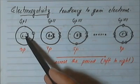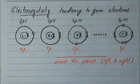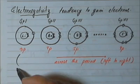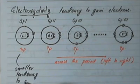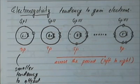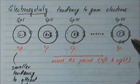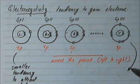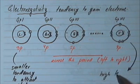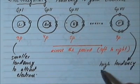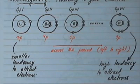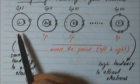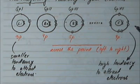Three protons in the nucleus will not exert enough positive charge to attract electrons, so lithium will have a smaller tendency to attract electrons. Fluorine, on the other hand, has nine protons, so its nucleus is very positively charged and is going to attract electrons very strongly. So fluorine is going to have a very high tendency to attract electrons. You have this trend across the period — as you move from the left-hand side to the right-hand side of the periodic table, the tendency for atoms to attract electrons increases.